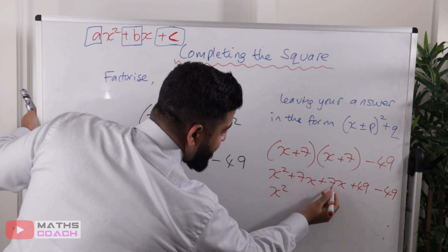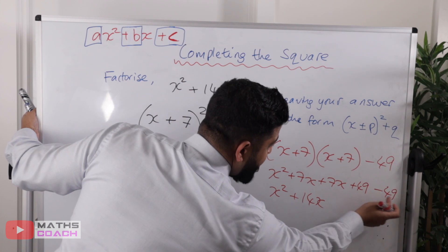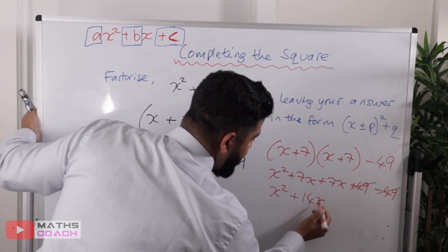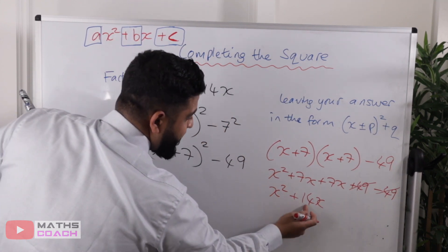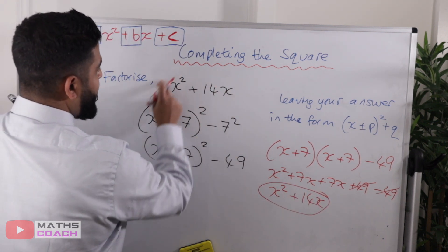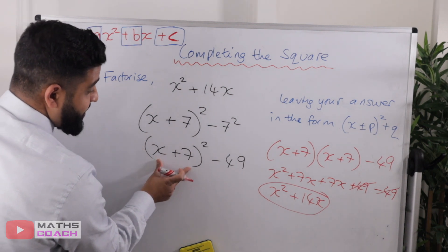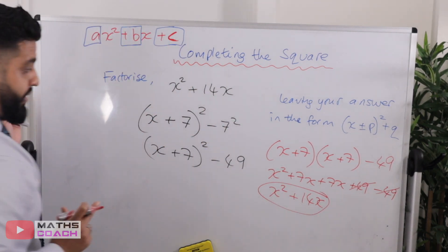So let's collect all the like terms. So x², we've got 7x and 7x, which is 14x, and the plus forty-nine and minus forty-nine, they cancel out. And we're just left with x² + 14x, which is the question that we had originally. So as you can see, when we expand this out, we get the same answer.